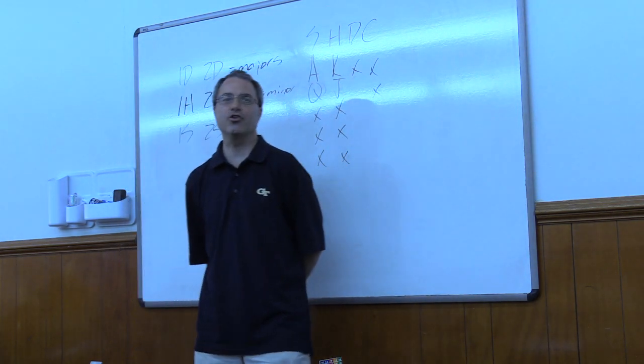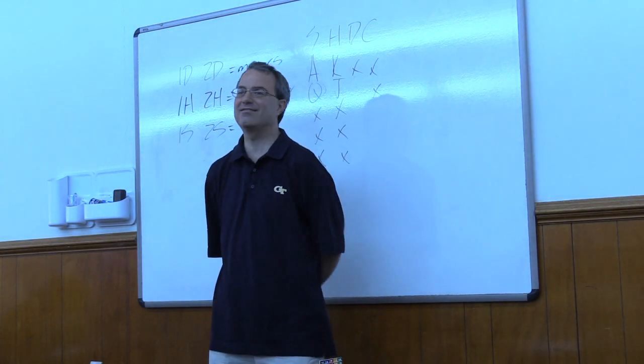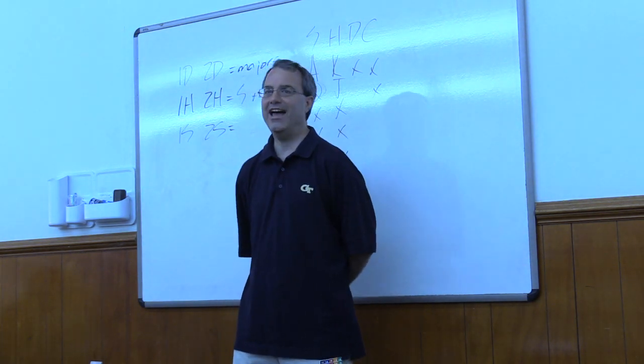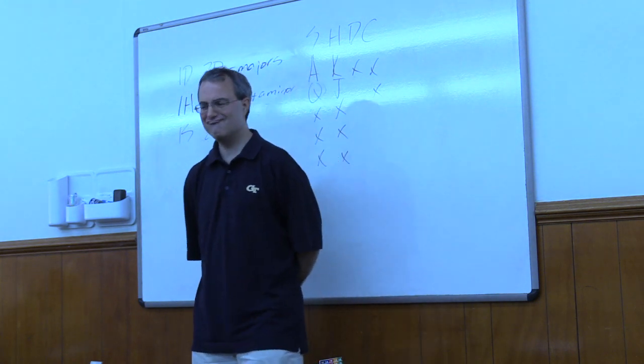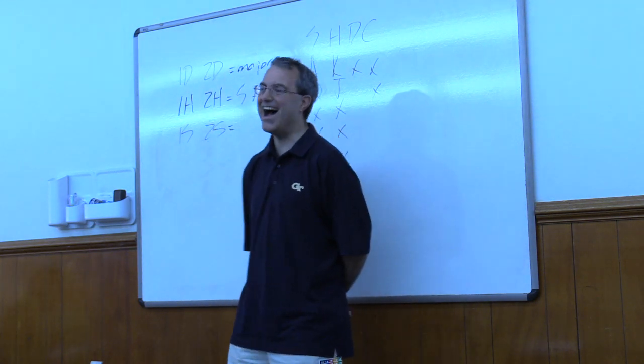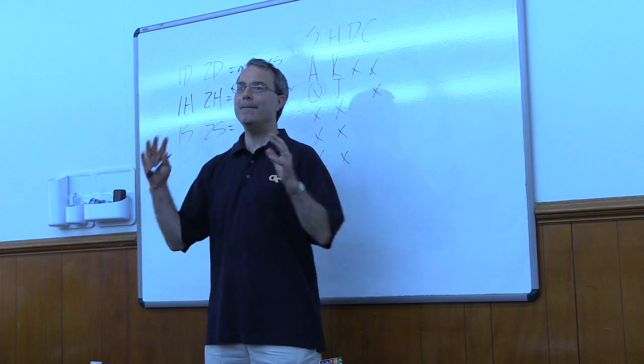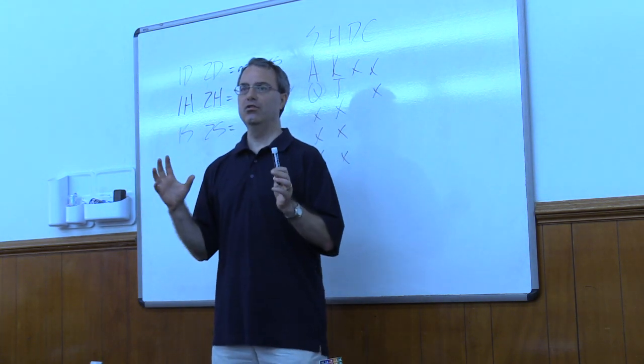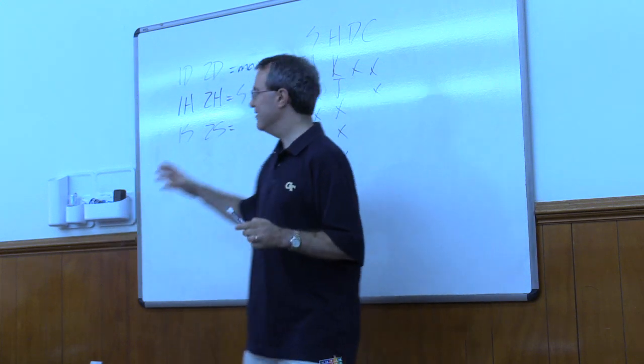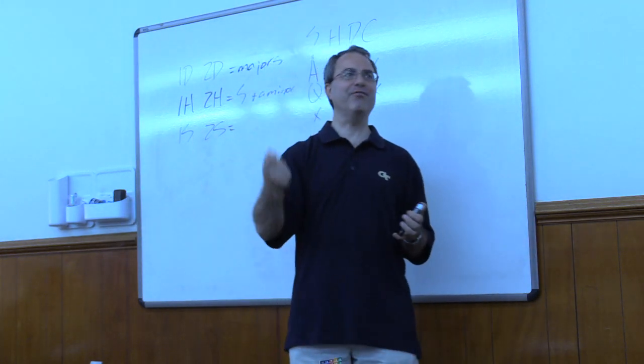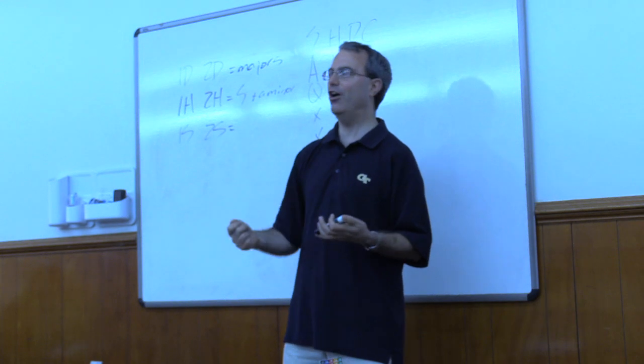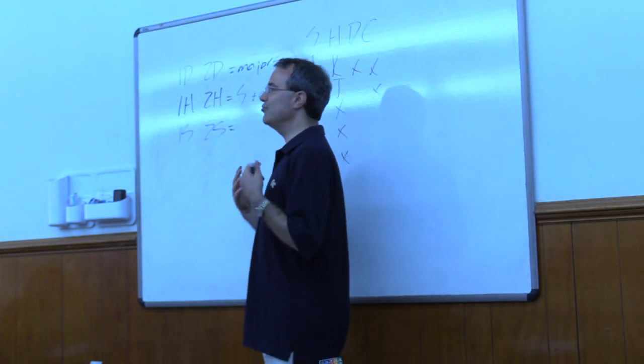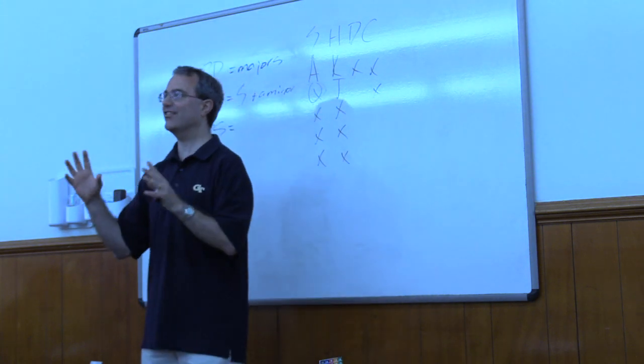So just how good of a hand I have to have depends on your agreement with your partner. It may be influenced by vulnerability. It may be influenced by what you had for breakfast. I would encourage you to have at least six or so points to do this. Have I ever done it with less? Yeah, depending on the vulnerability, because again, it takes up a lot of room. This bid makes it more difficult for the opponents to figure out where they belong and how high they belong. So you don't have to have a certain amount of stuff.